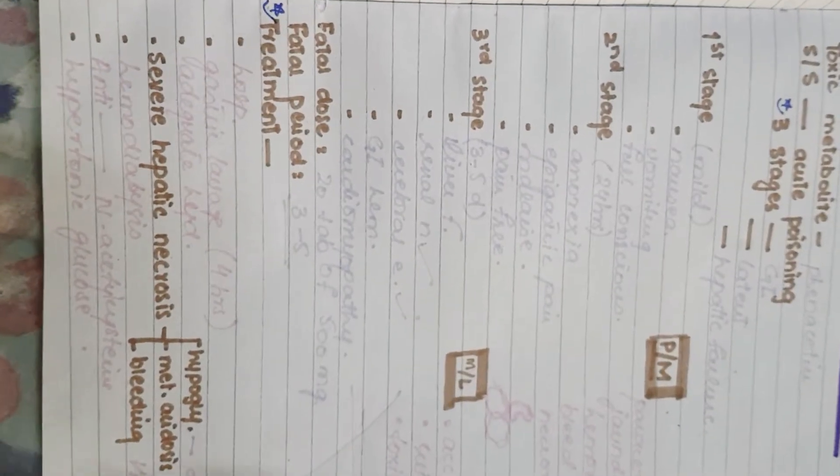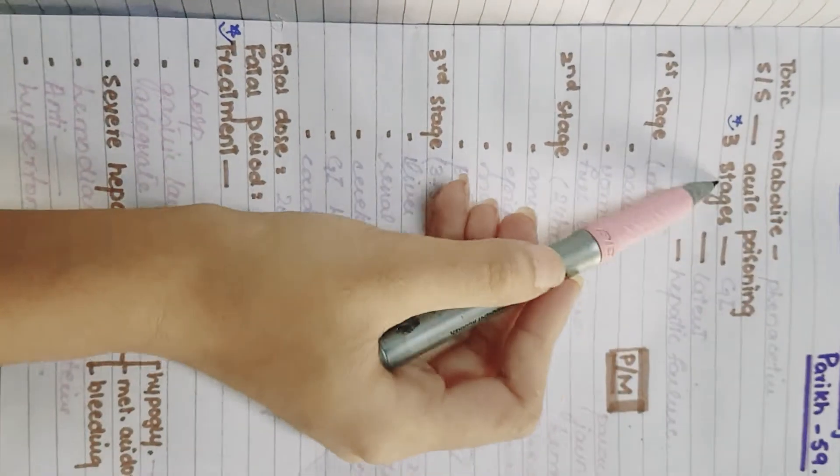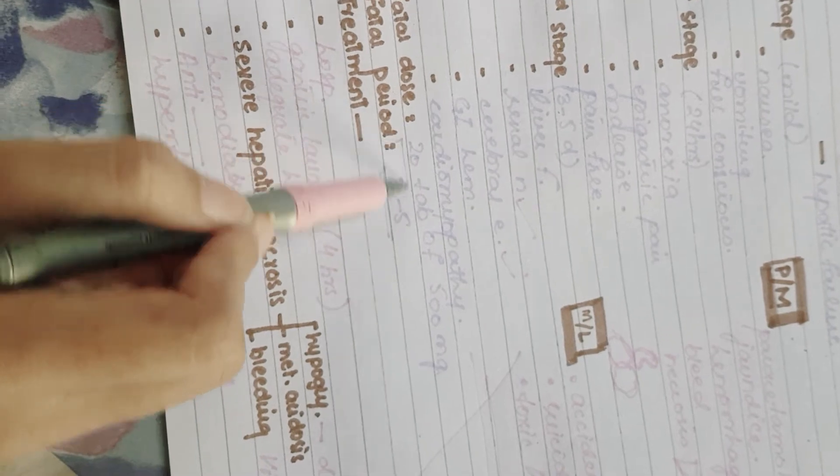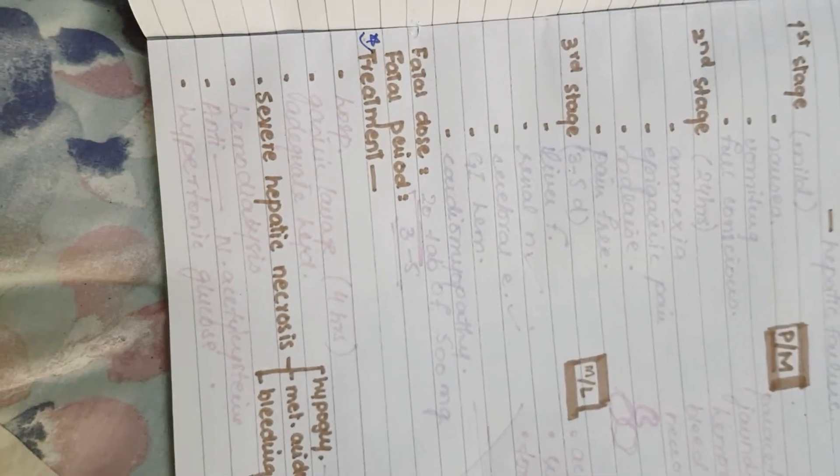This is all you need to know about paracetamol poisoning. The main important points that are asked in exams are the three stages and their features, the fatal dose of 20 tablets, and the treatment. Thank you.